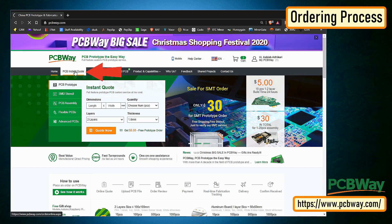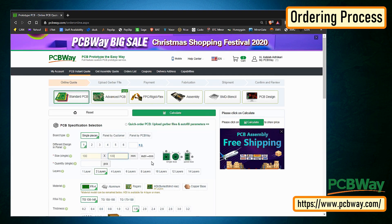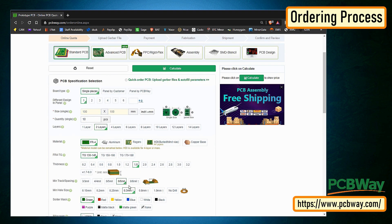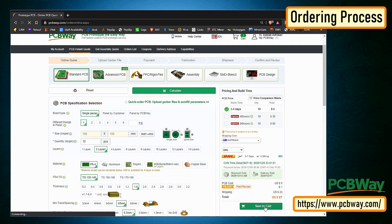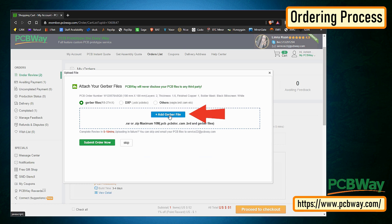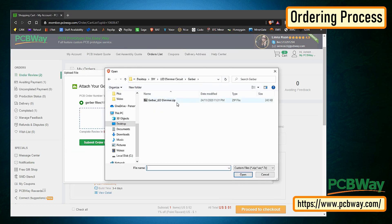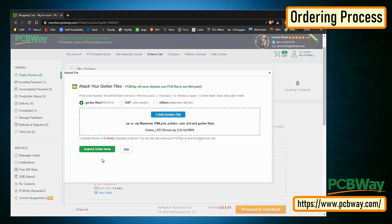Once I had my design ready, I just had to upload the Gerber file to the PCBWay's website and then select the type, color, and any other customization that I want and then just send it for fabrication. For my project, I chose the black color. PCBWay ships from China to most of the countries of the world within 3 to 7 business days.